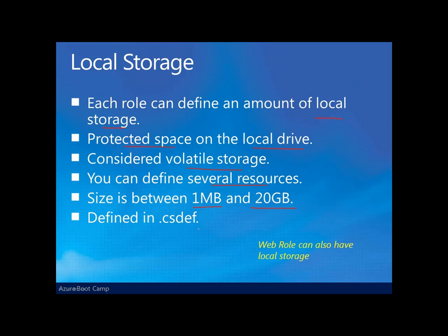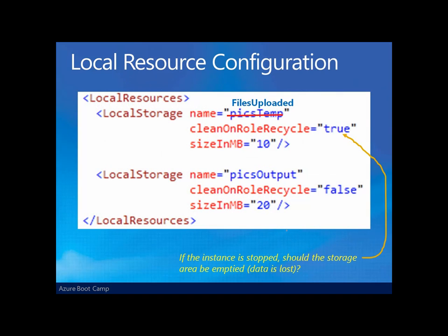We can define several resources for that particular storage, and each storage resource is set up to be assigned between 1 and 20 gigabytes. We define this local storage in our configuration XML files. In the service configuration file, we set it up as a local resource, giving it a name and a size, and also dictating whether that particular storage should be cleaned up when the role is recycled. Clean on role recycle set to true means that local storage is empty on every recycle of that role.